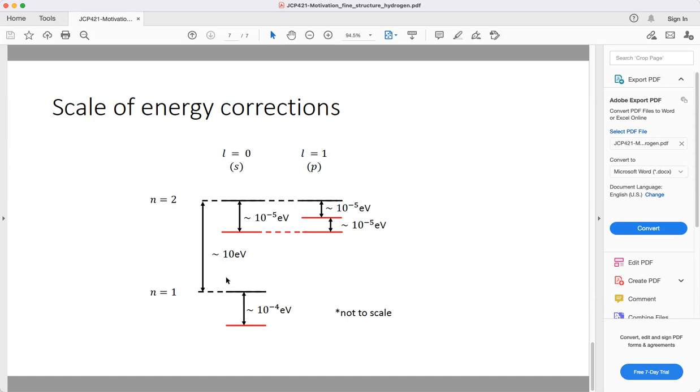This suggests that whatever contributions we've missed in our original Hamiltonian will be perturbatively small, and we can use the tools we've developed with perturbation theory to address these discrepancies.